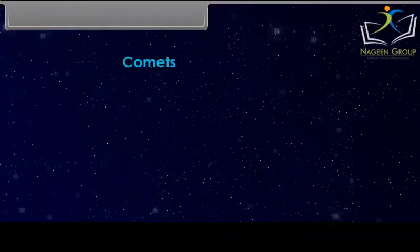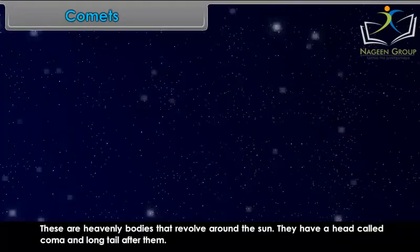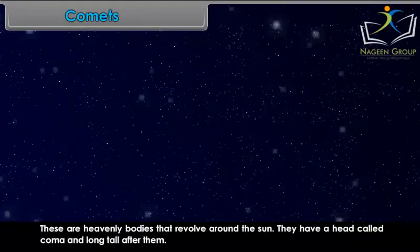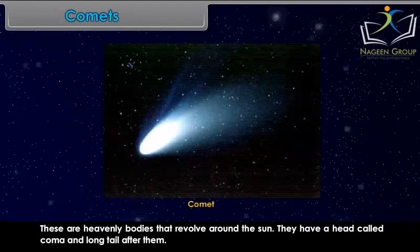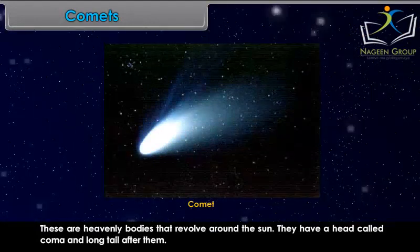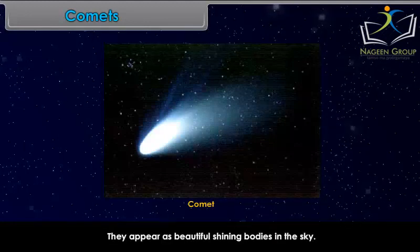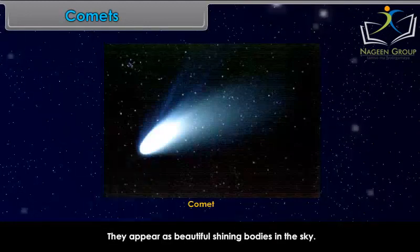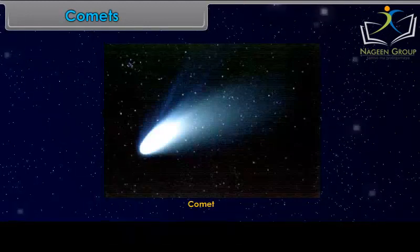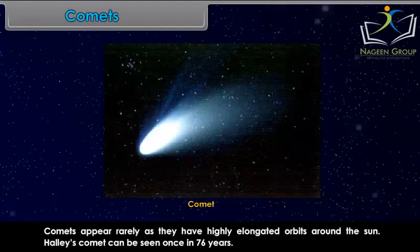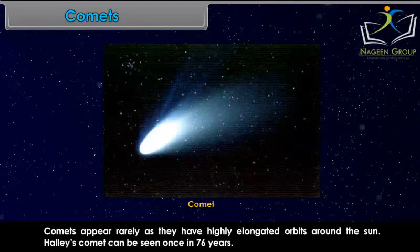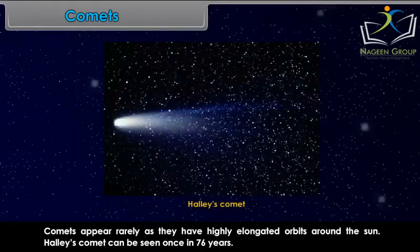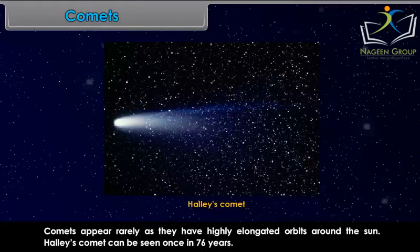Comets are heavenly bodies that revolve around the Sun. They have a head called Coma and a long tail after them. They appear as beautiful shining bodies in the sky. Comets appear rarely as they have highly elongated orbits around the Sun. Halley's comet can be seen once in 76 years.